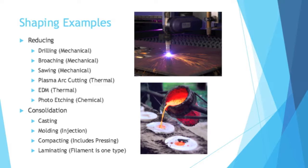Then we have consolidation — bringing things together. First there's casting, which is when you pour molten metal to form an object. There's molding; the most famous is injection molding, typically used with plastics. A lot of toys and tools that have plastic in them use injection molding.